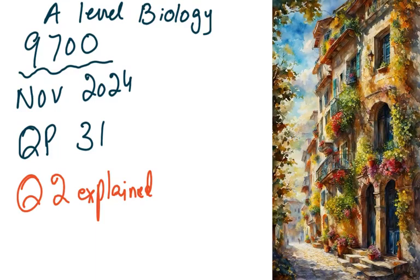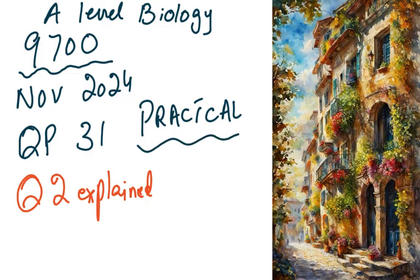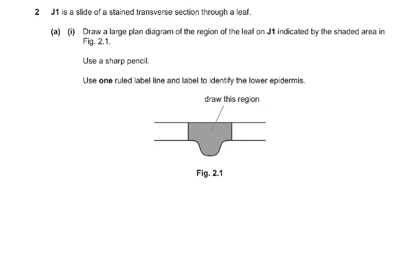November 24 question paper 3, this is the practical exam and we're going to do question 2, which I'm going to explain in this video. We've done question 1 in a previous video. J1 is a slide of a stained transverse section through a leaf. Draw a large plan drawing of the region — they've told you that it's a leaf.